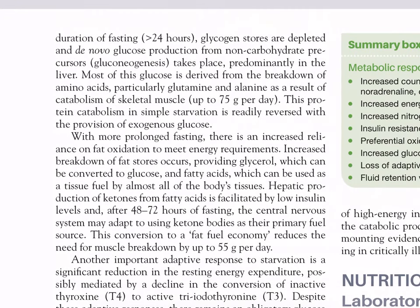With increasing duration of fasting beyond 24 hours, glycogen stores are depleted and de novo glucose production from non-carbohydrate precursors — gluconeogenesis — takes place predominantly in the liver. Most of this glucose is derived from the breakdown of amino acids, particularly glutamine and alanine, as a result of catabolism of skeletal muscle at up to 75 grams per day.